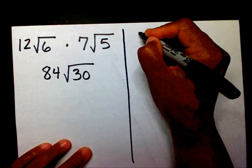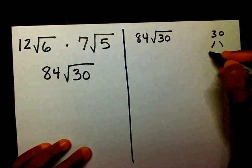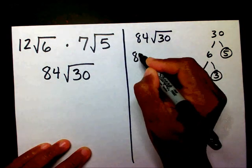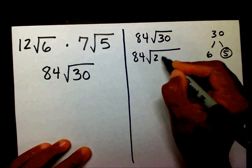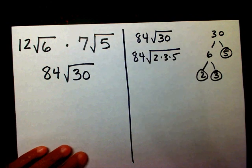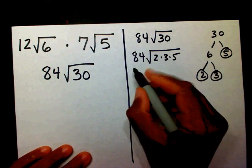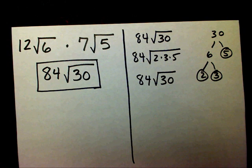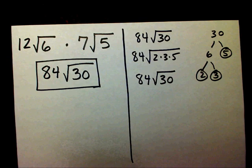I need to simplify this, so I'm going to bring my 84 radical 30 down. I'm going to make a factor tree for my 30, which is 6 and 5, 2 and 3. Well, I'm going to bring down my 84. My 30, the prime factorization of 30, is going to be 2 times 3 times 5. Since I can't form any perfect squares, that means that it's already simplified. So, this is my final answer. Sometimes, the answer will already be in simplified form.